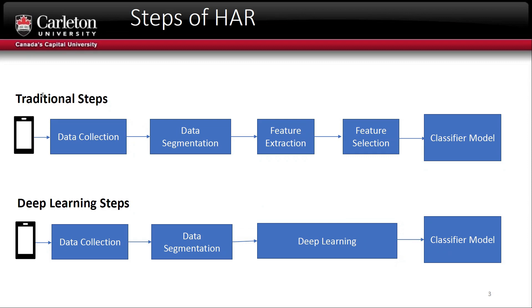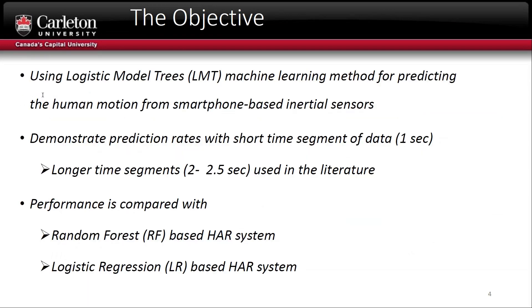The problem with deep learning is that it needs a huge amount of training data, and the classifier model is unexplainable — it's just a black box. So here we are introducing the logistic model tree for human activity recognition. The logistic model tree provides an explainable model and at the same time performs automatic feature selection and weighting without the need for any separate feature selection algorithm. It does the same as deep learning but with less training data and a better explainable model.